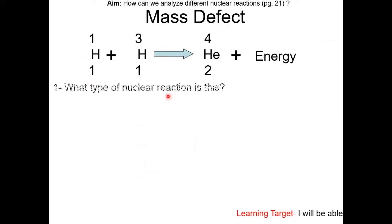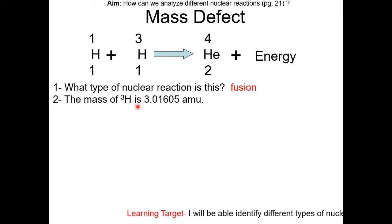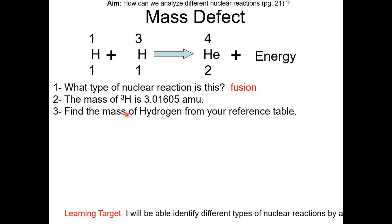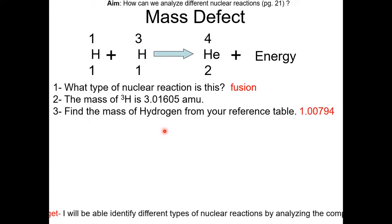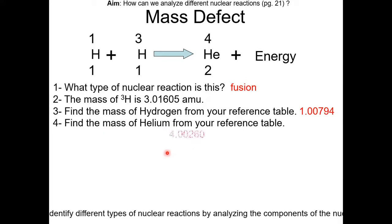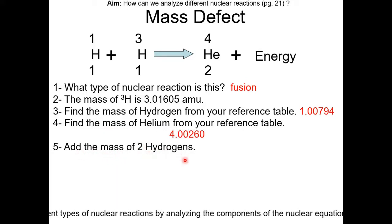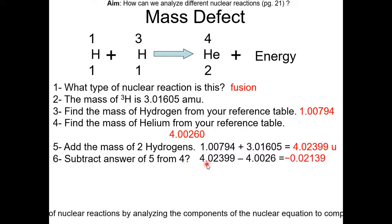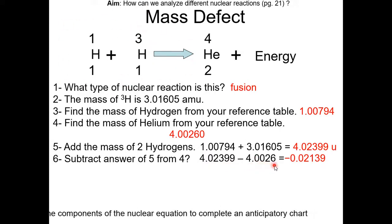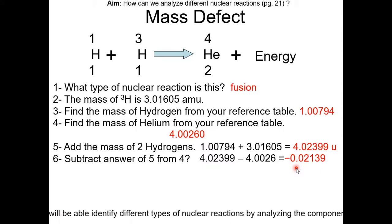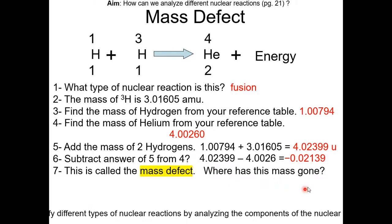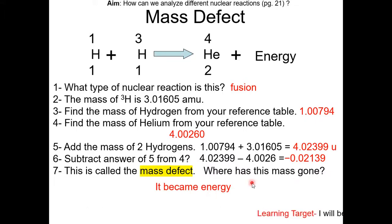Here is an example of mass defect. This reaction is fusion. The mass of the H-3 isotope is 3.01605 amu. Find the mass of hydrogen-1 and helium from your reference table, then add the masses of the two hydrogens. The total mass of the reactants is 4.02399 amu, and the mass of helium (the product) is 4.0026 amu. Notice they are not equal — the law of conservation of mass is not observed. This is mass defect; the missing mass became energy.